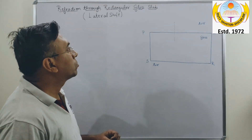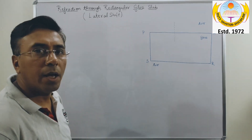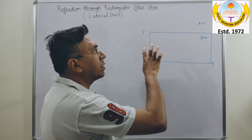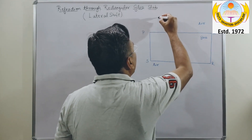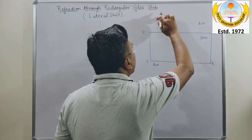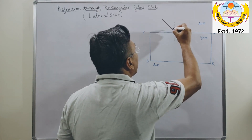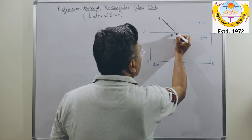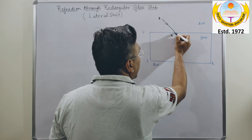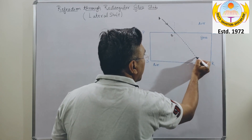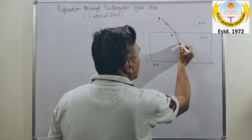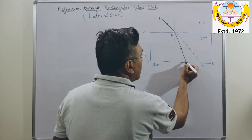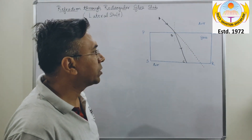In this video we will study refraction through a rectangular glass slab and lateral shift. PQRS is a glass slab placed in the medium air. AB is the incident ray striking the glass slab on surface PQ. This ray undergoes refraction — instead of going straight, the refracted ray bends towards the normal and moves towards surface SR. BC is the refracted ray moving towards surface SR.